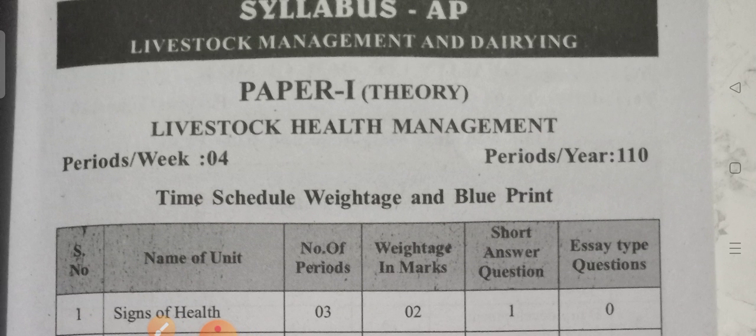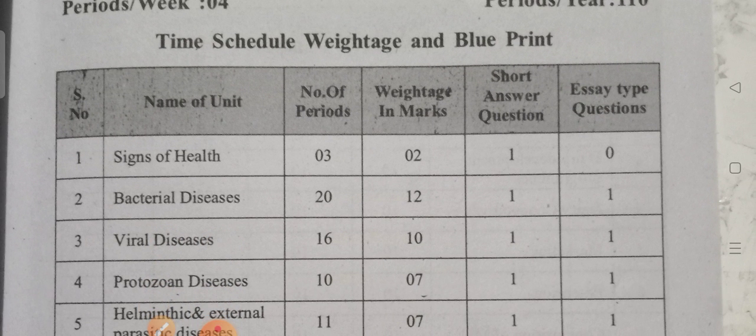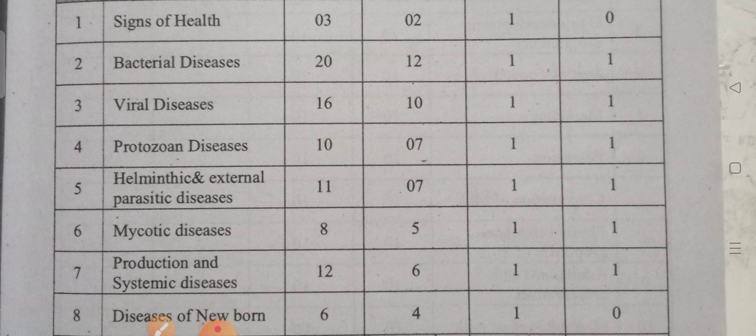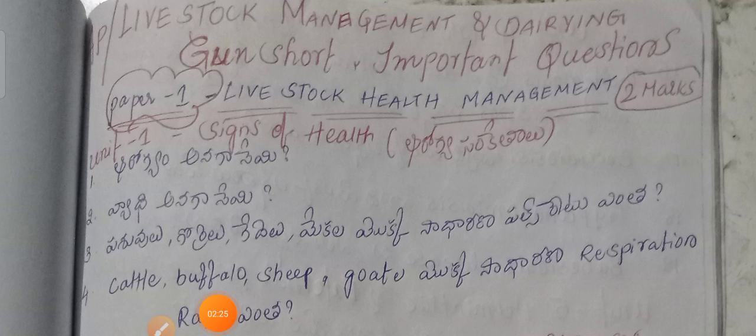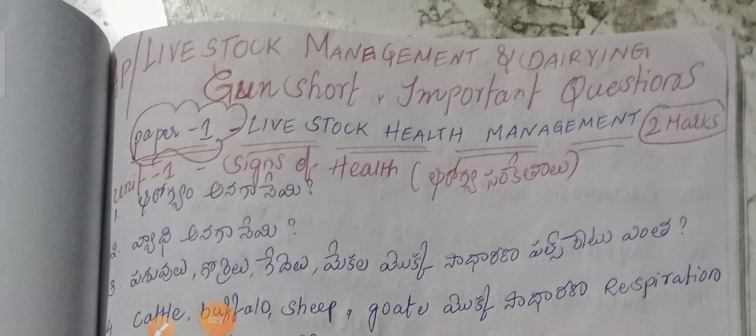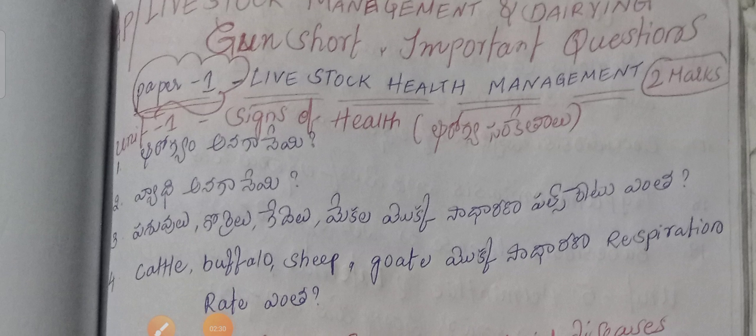For Paper 1 important and gunshot questions, if you want them in video format you can watch this video, or you can pay to get the PDF. We are going to prepare unit-wise two-mark questions for AP Livestock Management and Dairying, Paper 1 — Livestock Health Management. Two-mark questions are prepared unit-wise.